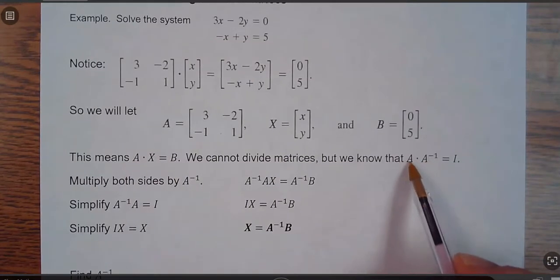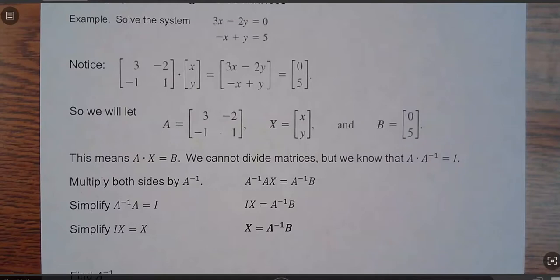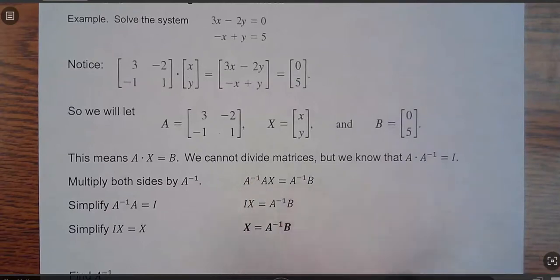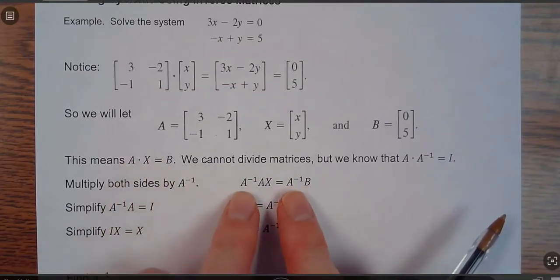Because if I take A times its inverse, I'll get I. And I times any, you know, the identity matrix. And then the identity matrix times any matrix is just that back. So if I multiply both sides by the identity matrix—I'm sorry, by the inverse of A, not by the identity matrix, multiply by the inverse of A.